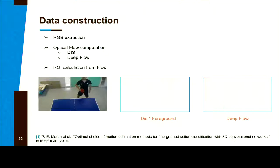Here you have some examples. This is DIS, and we multiplied it with a foreground mask because DIS is very noisy. Here we use Deep Flow. We didn't need to multiply with a mask because it's already quite clean.